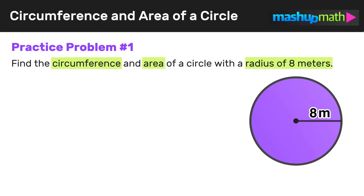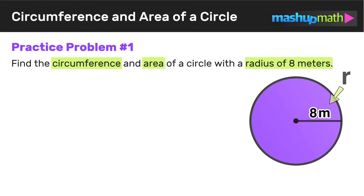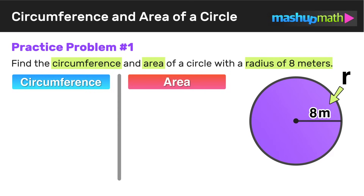Here is our first practice problem. We have to find the circumference and area of a circle with a radius of 8 meters. Correctly identifying the radius of a circle is key to finding the circumference and the area. In this example, we know that r is equal to 8 — that is given to us. Now we can use the circumference and area formulas to solve this problem since we know what r is.